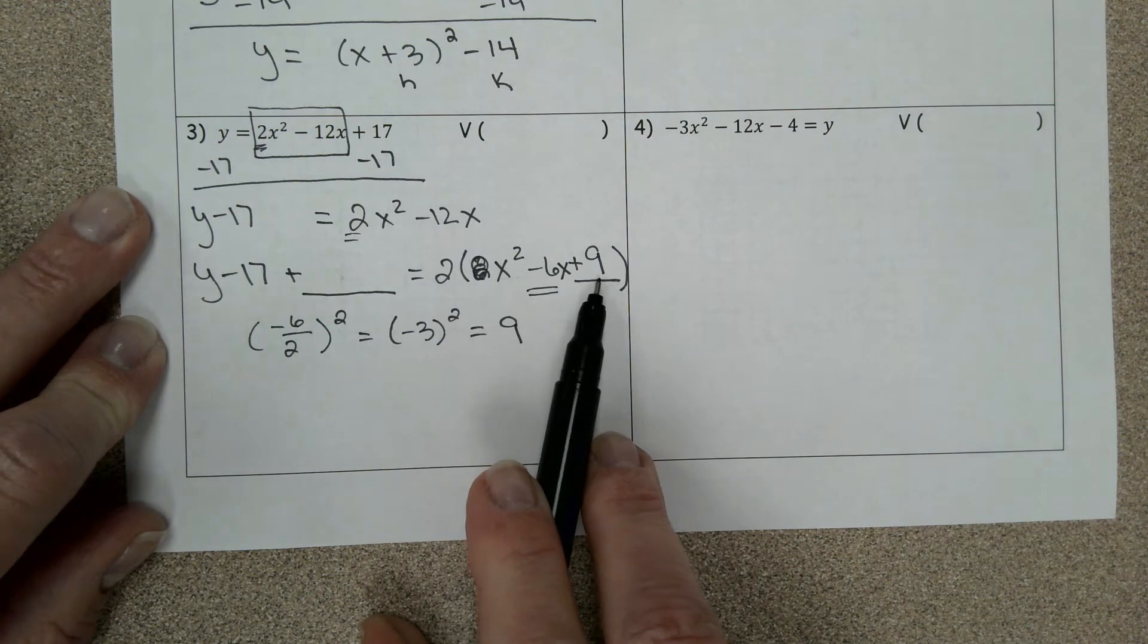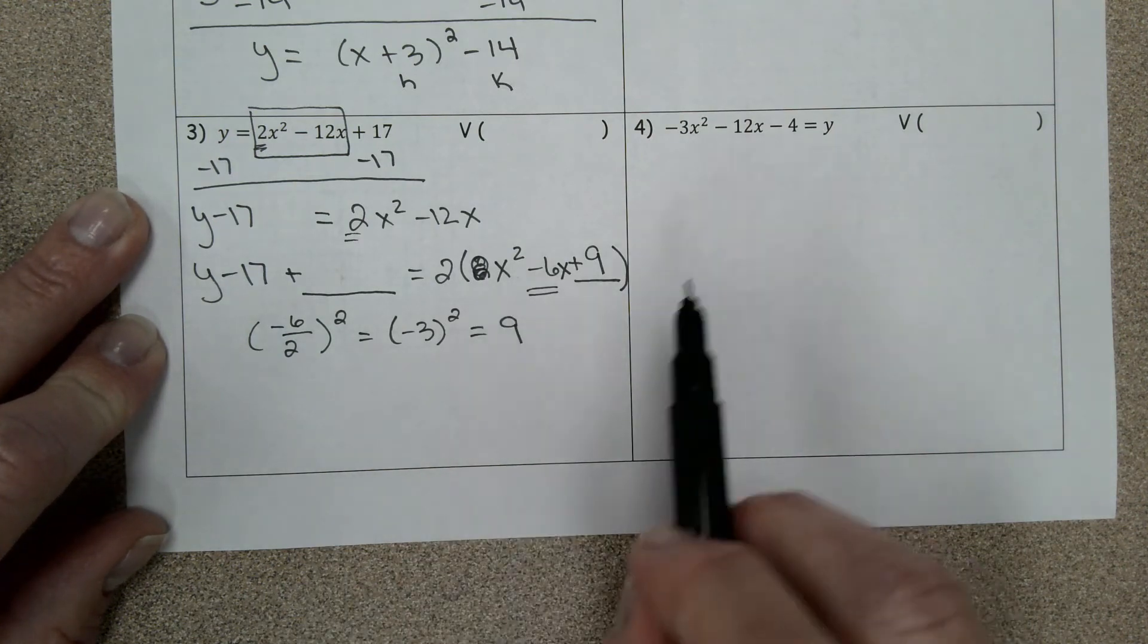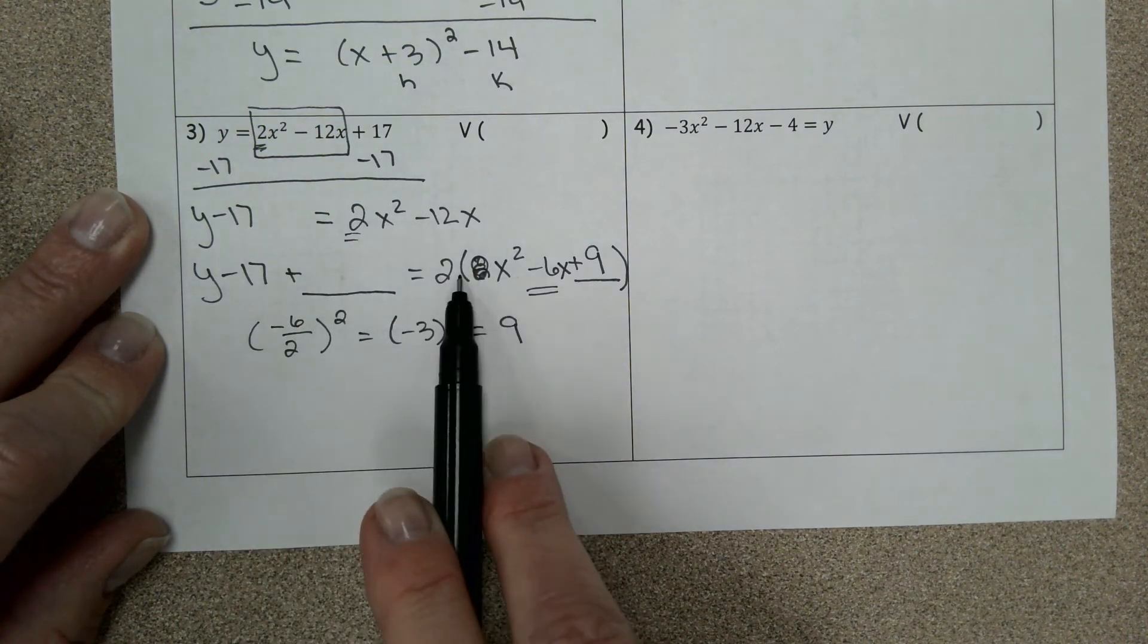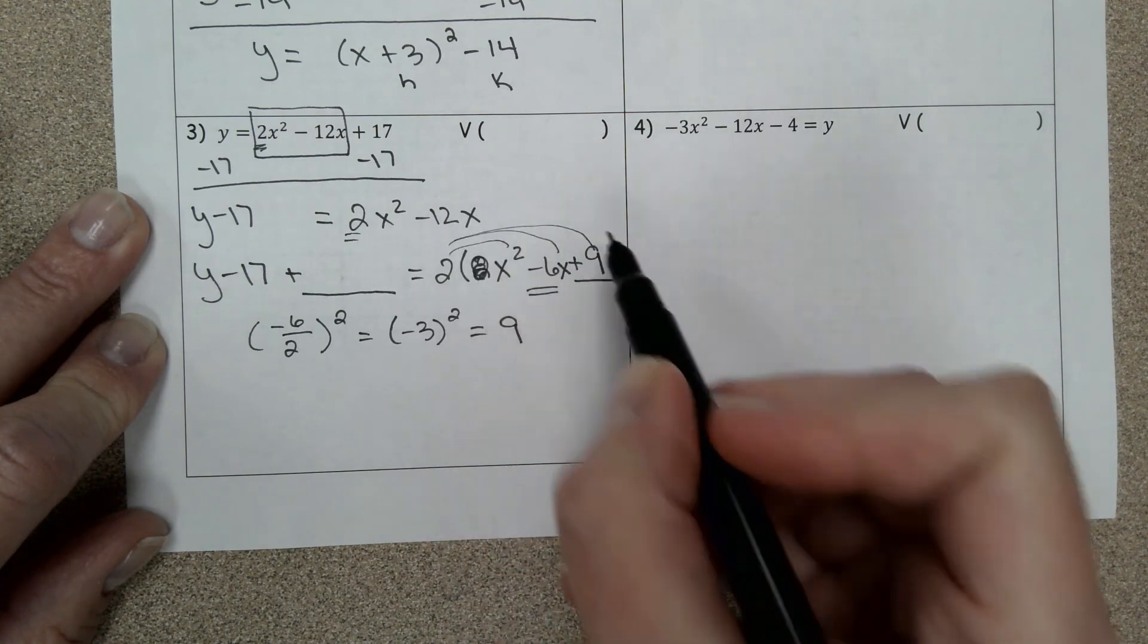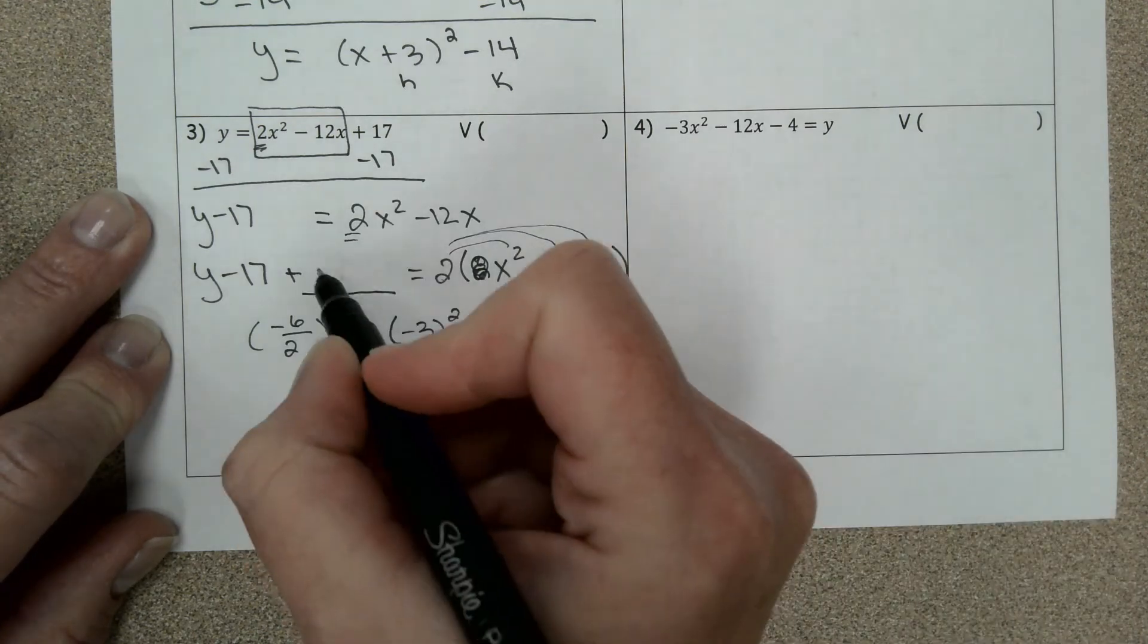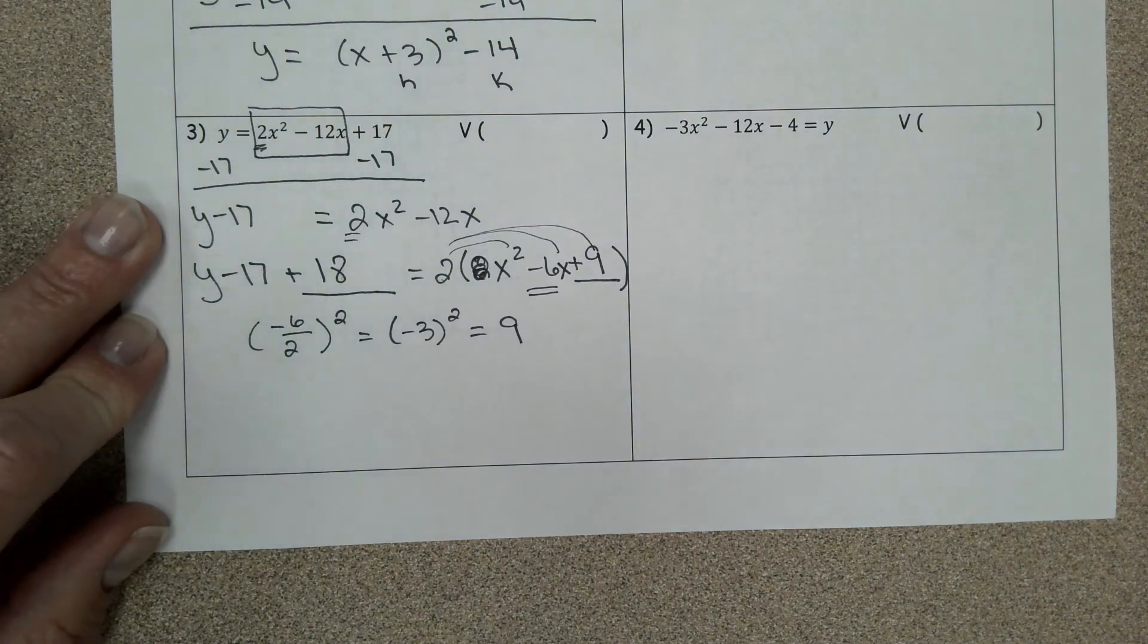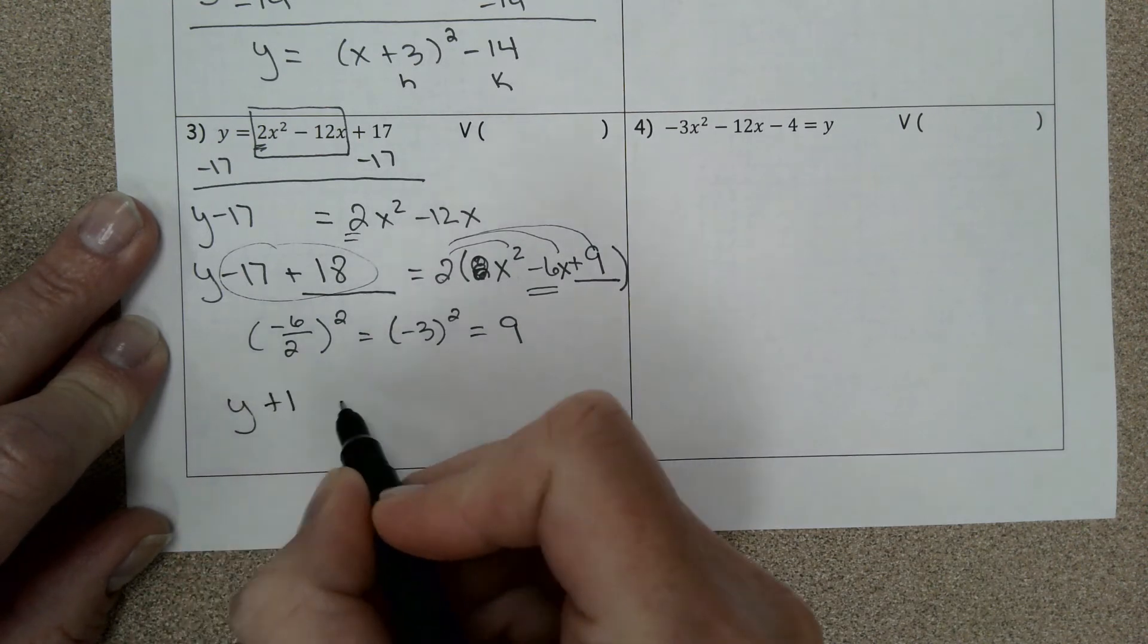So 9 is the value that completes the square for the parentheses. But I can't just add 9 right here. Why? Because you have the distributive property that you have to think about and take into account. 2 times 9 is 18. I really added 18 to both sides. On the left I'm going to combine like terms, so that adds up to 1.